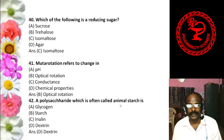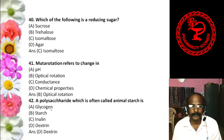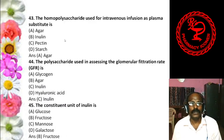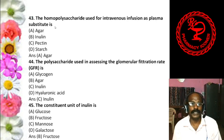Question 6: Which of the following mucopolysaccharides is non-sulfated and most abundant in tissue? Options are: A. Heparin, B. Hyaluronic acid, C. Keratan sulfate, D. Dermatan sulfate. The answer is Hyaluronic acid — it is non-sulfated, containing no sulfur groups.